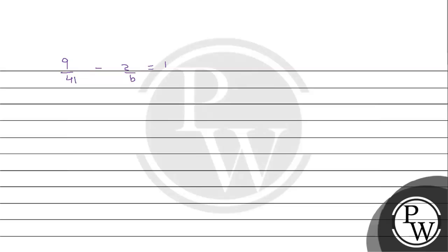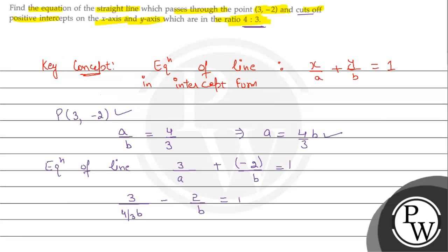We have 9/(4b) - 2/b = 1. Taking LCM of 4b and b, which is 4b, the numerator becomes 9 - 8 = 1. So, 1/(4b) = 1, which gives 4b = 1, therefore b = 1/4. Let us call a = (4/3)b equation 1, and now put the value of b into equation 1.